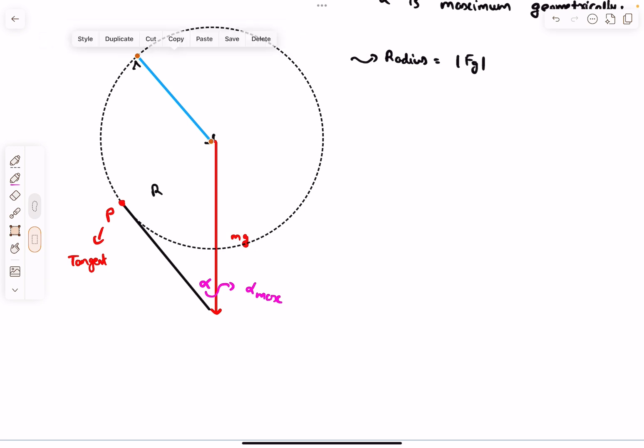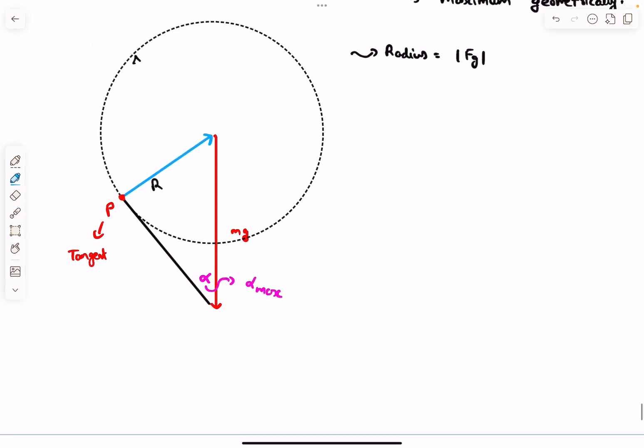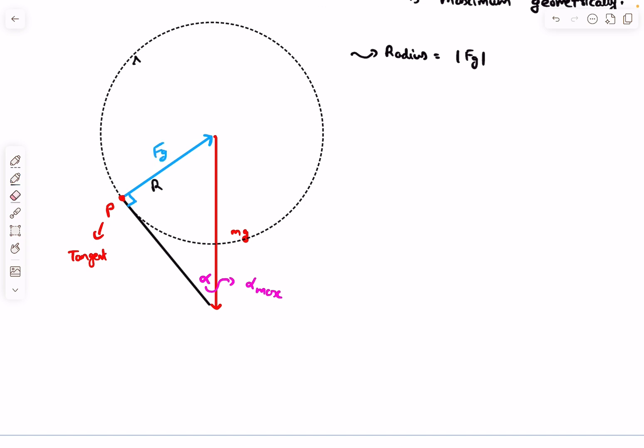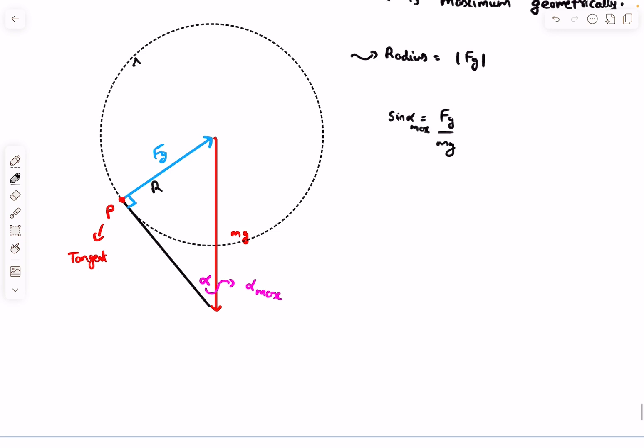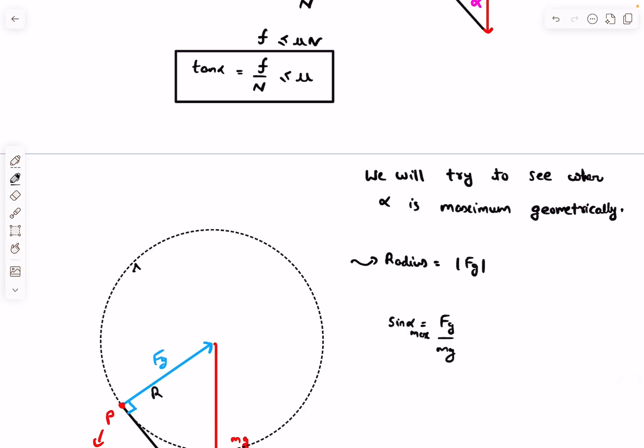This is the point where alpha attains maximum value. Let's bring back the Fg vector in this direction. Now we have the force triangle in the maximum possible alpha case. Looking at this triangle, it's easy to observe that sine of alpha is Fg divided by mg. In fact, I should write sine alpha maximum.